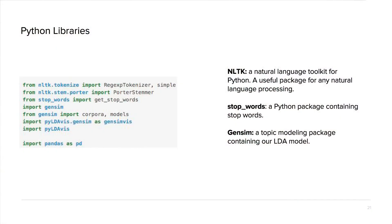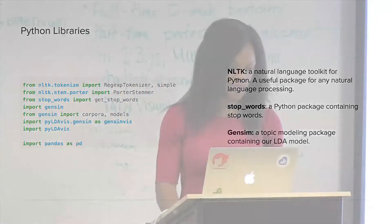Now for the Python libraries I'll be using in the walkthrough. NLTK is a natural language toolkit for Python — a really useful package for any natural language processing. There's also the stop words package containing stop words, which are words that don't add meaning to a sentence, like 'the' or 'and' — the package removes those. And then Gensim, which is a topic modeling package that contains our LDA model.